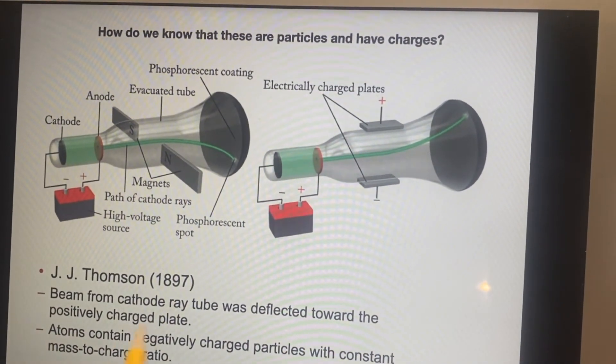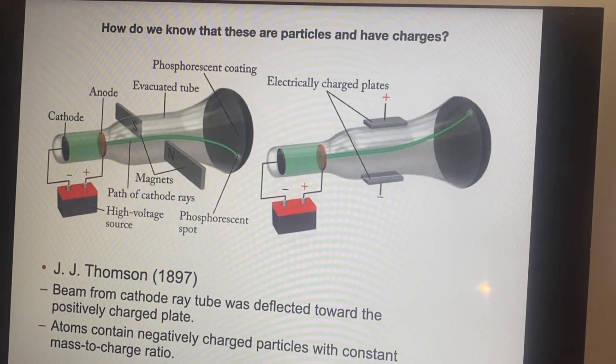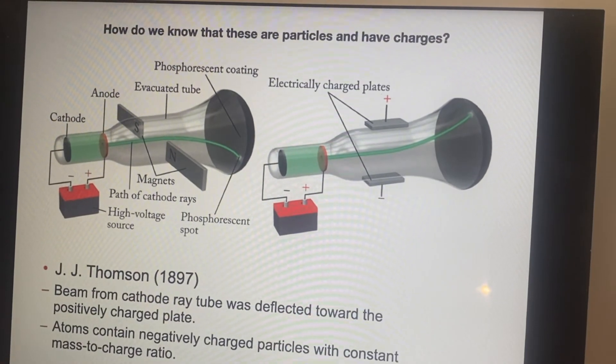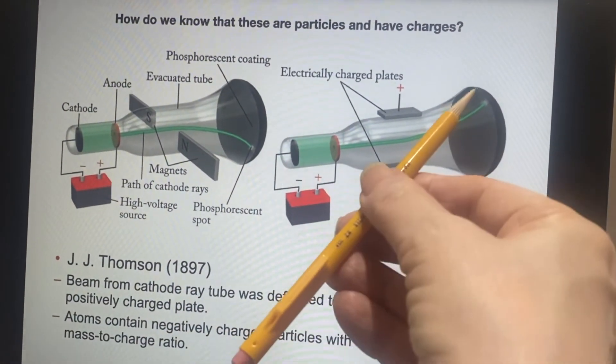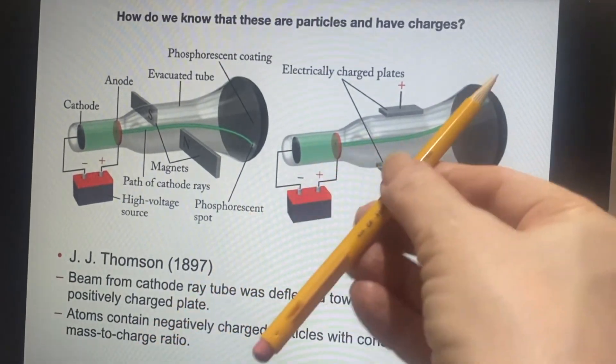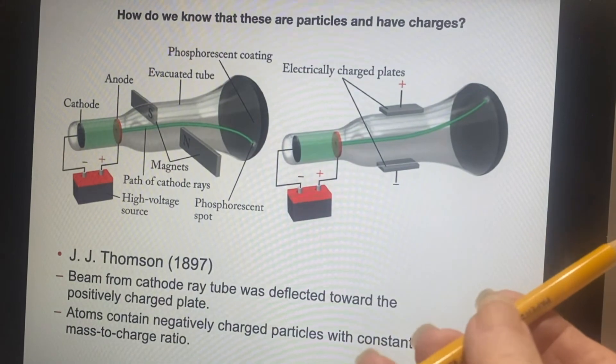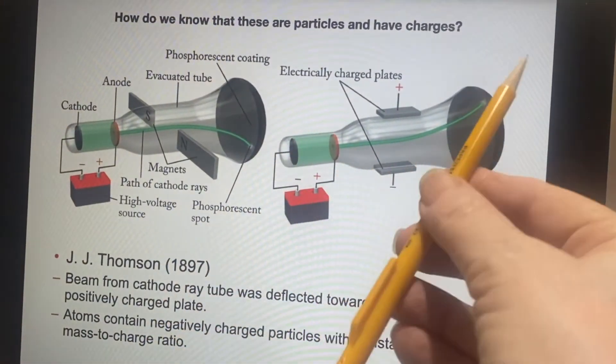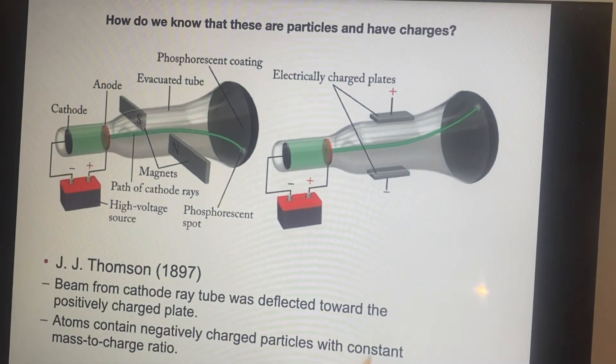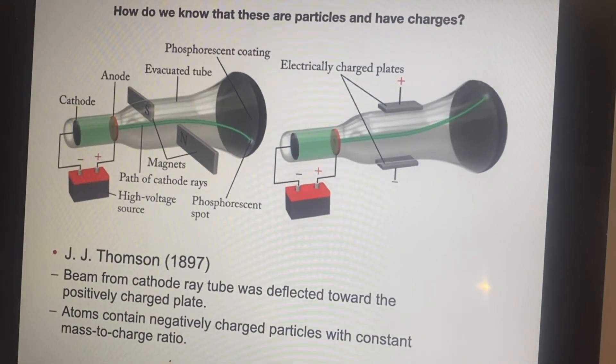So, he said, atoms must have negatively charged particles in them and that there is some sort of constant mass-to-charge ratio because this curve is always the same. It's not like there's three different ones that would indicate that something was heavier and didn't get deflected as much or lighter and got deflected more. No, it was always a very consistent curve. So, it's one single ratio. There's a mass-to-charge ratio.